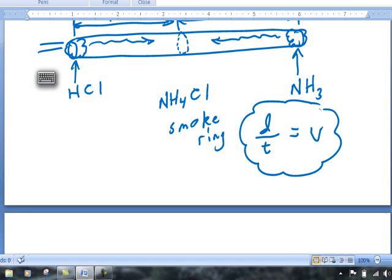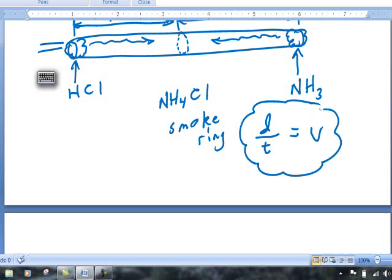If we know the velocity of the ammonia and the velocity of the HCl, we can compare them to see if Graham's Law is actually working.